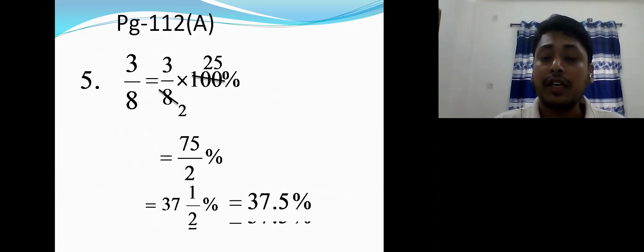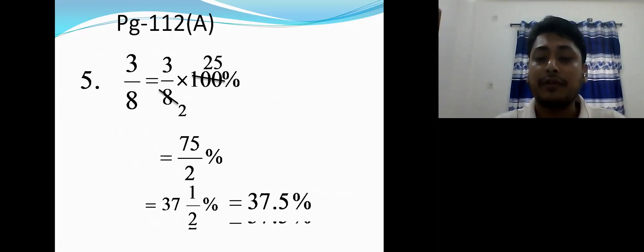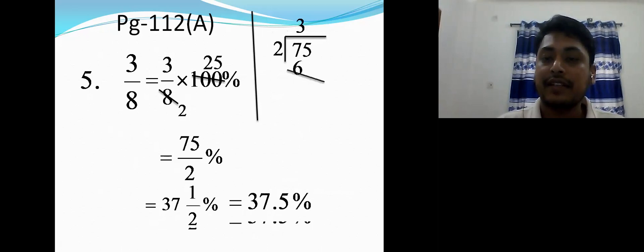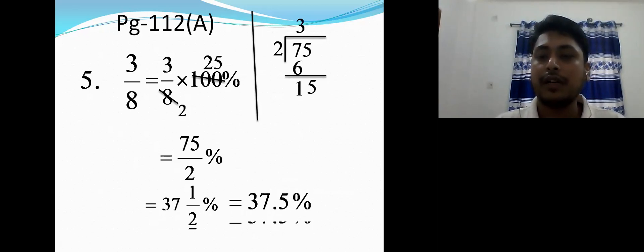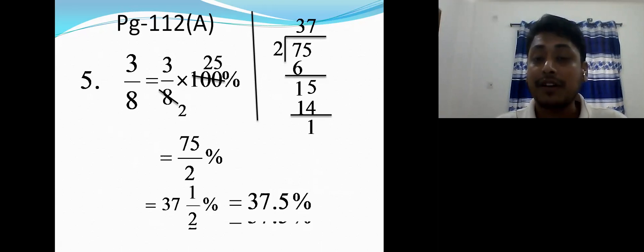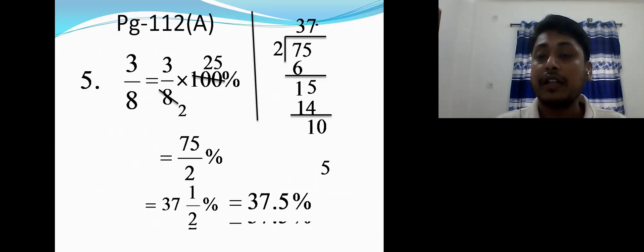The answer can be written as a mixed number or decimal, but keeping the answer in decimal is better. So 75 divided by 2: we get 37 and a half, which equals 37.5%. I'm showing how to write 37½ percent or 37.5. When dividing, bring remainders down and take decimal point with zero to continue.